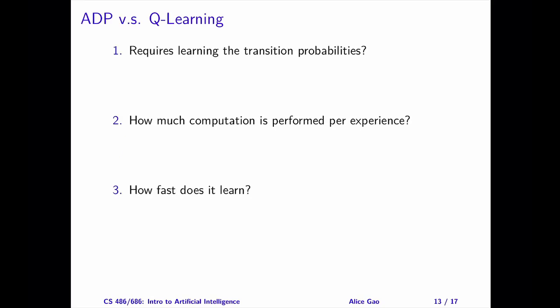Let's compare ADP and Q-learning. They're both reinforcement learning algorithms, but they're different in some significant ways. Number one, does the algorithm require the agent to learn the transition probabilities? ADP is model-based and requires the agent to learn the transition probabilities. Q-learning is model-free and does not need to learn the transition probabilities.